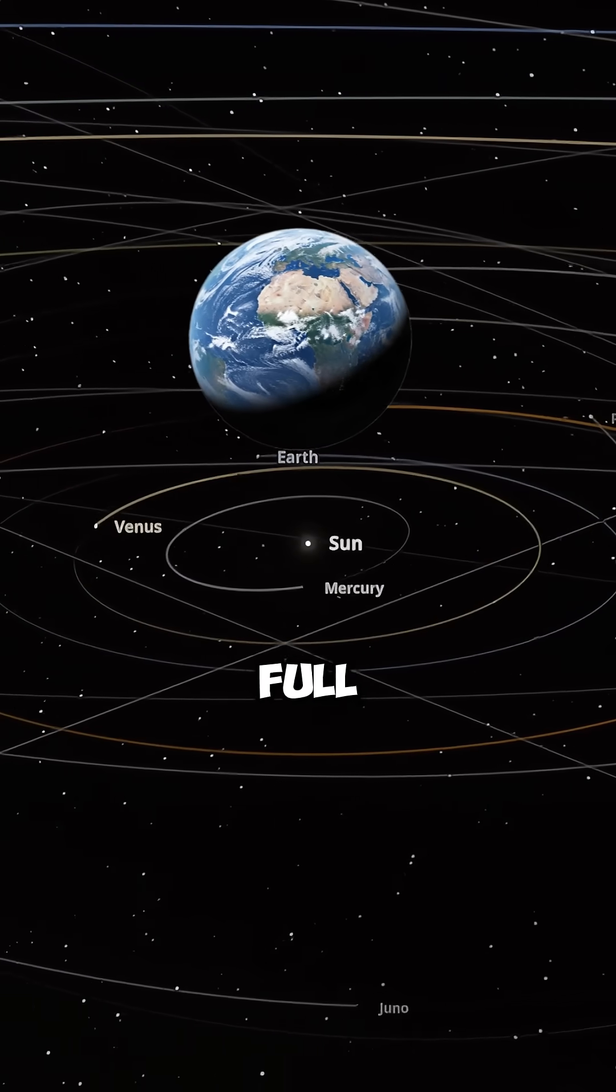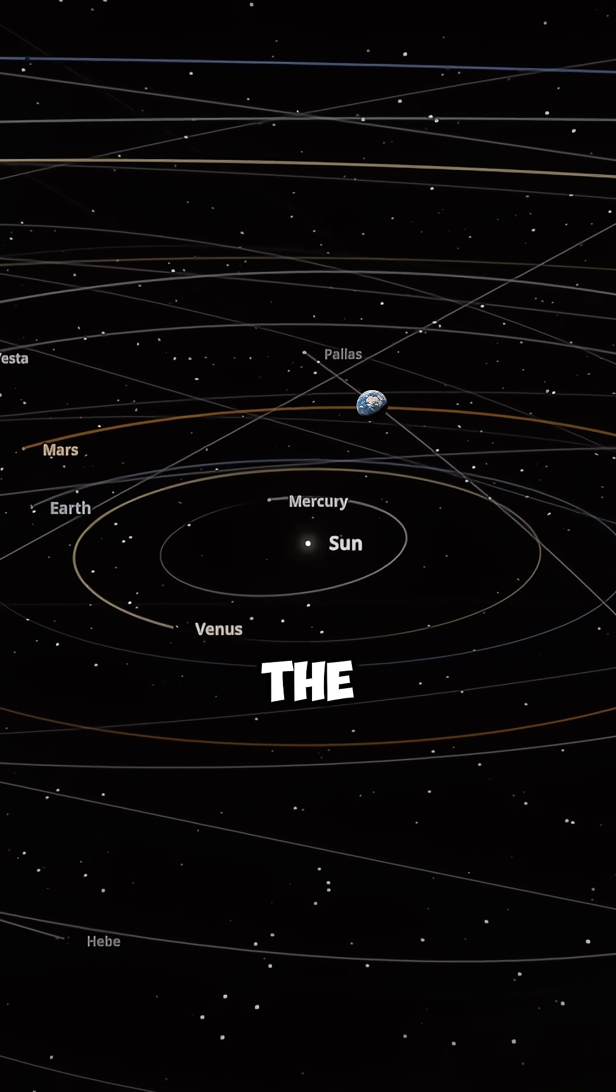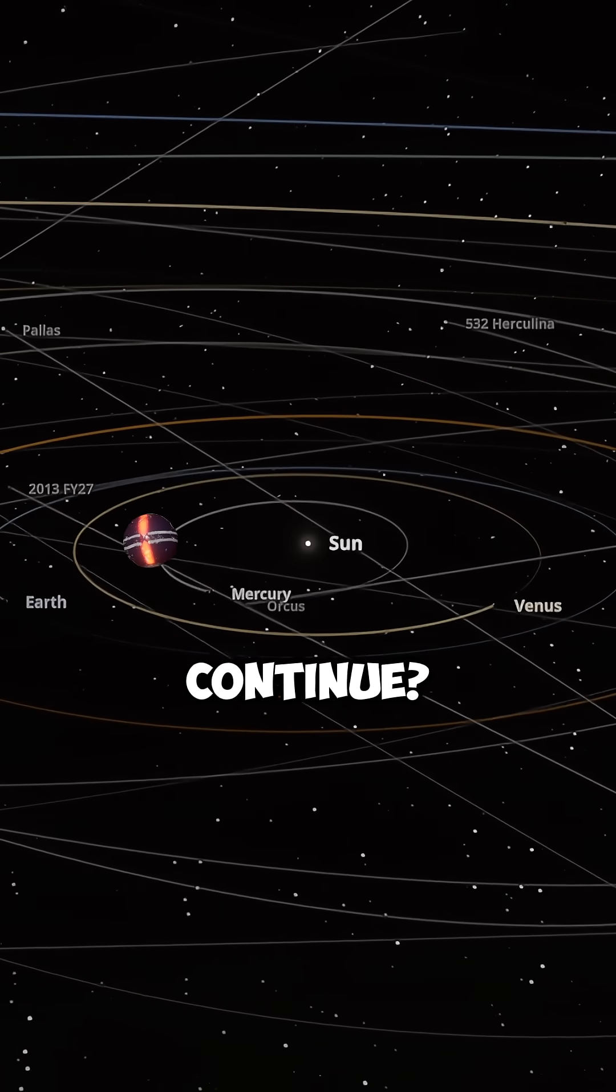Here we are in our solar system, where Earth is full of life. But what if we replace Earth with the One Piece planet? Would life still continue?